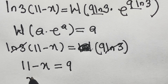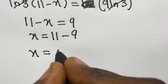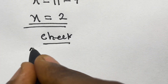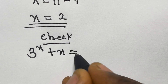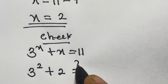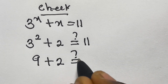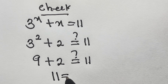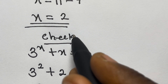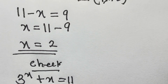Collecting like terms, we get x equals 11 minus 9, so x equals 2. We can verify: 3 raised to the power x plus x equals 11. Substituting x equals 2, we have 3 raised to the power 2 plus 2. That gives us 9 plus 2, which equals 11. So x equals 2 satisfies the given equation. Thank you for watching, I hope you enjoyed this video. Kindly like and leave a comment, and don't forget to share with your friends and network, and subscribe to my channel to stay updated. Bye!